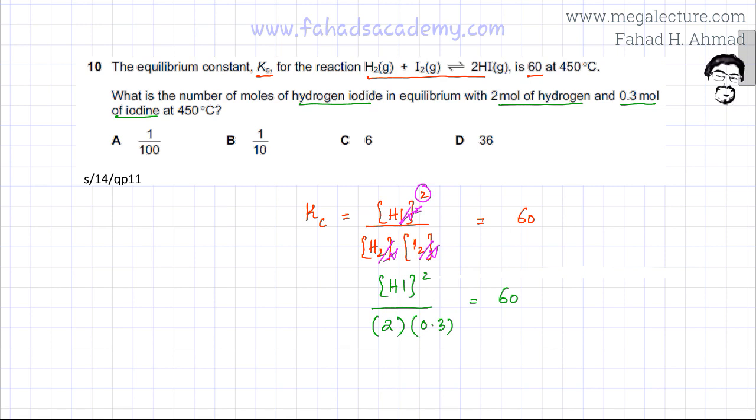We just need to solve this now and find the moles of HI. The moles of HI on my calculator comes out to be equal to 6. So option C is going to be the correct option for this question.